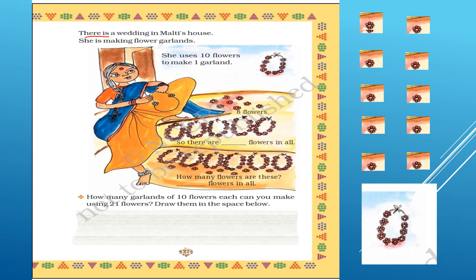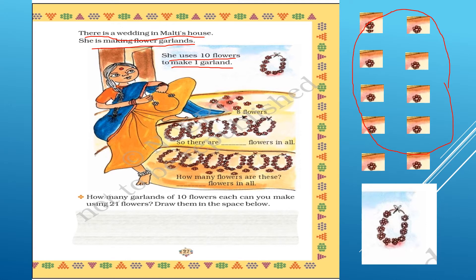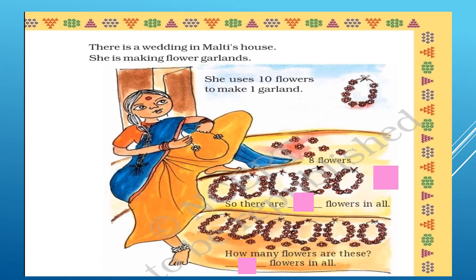Next, there is a wedding in Malti's house and she is making flower garlands. She uses 10 flowers to make one garland, which means 10 flowers equal one garland. Here, there are eight flowers. And there are one, two, three, four, five — five garlands. Five garlands means 50 flowers.